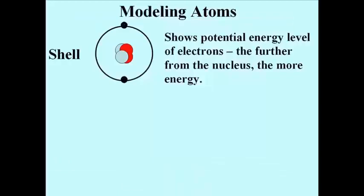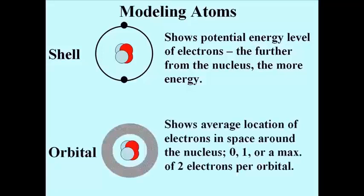To understand how the energy and location of electrons in atoms and molecules explains their chemical properties, we model atoms in two ways. The shell model shown here emphasizes the potential and kinetic energy of electrons. The further from the nucleus, the faster the electrons move. The orbital model emphasizes the space occupied by electrons around the nucleus. Each orbital can contain 0 or 1 or 2 electrons.